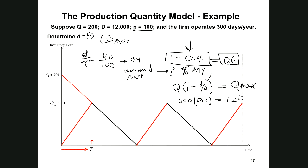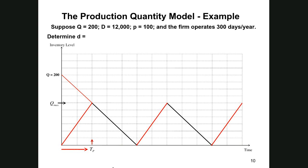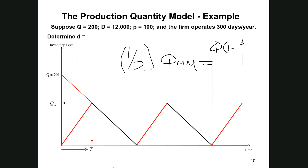The average inventory on hand follows the same process as before: it's one-half times the maximum inventory on hand. So average inventory = Q_max / 2 = Q × (1 − d/p) / 2. That is our average inventory on hand for the production quantity model.